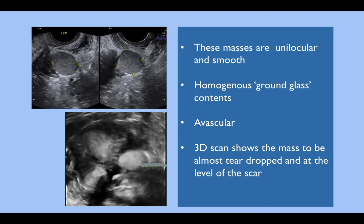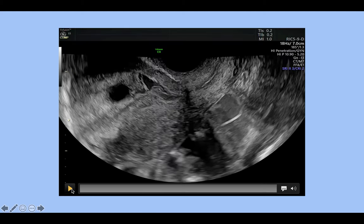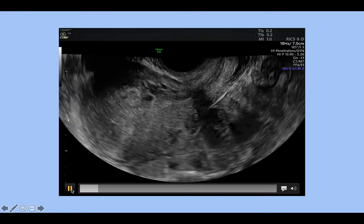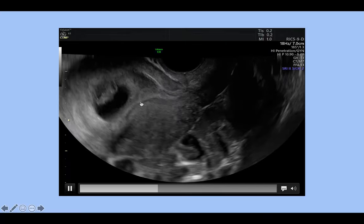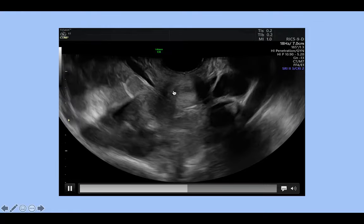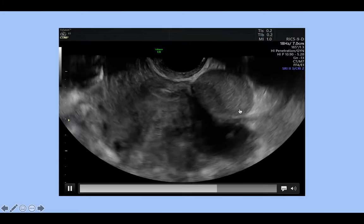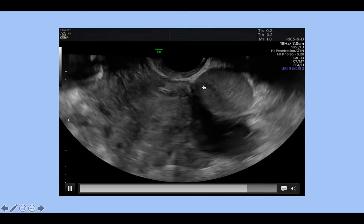These masses are unilocular and smooth, homogenous with almost ground-glass contents like an endometrioma, and they are avascular. On 3D scan you can see the endometrial cavity, the caesarean scar, and this teardrop mass at the level of the scar. It is quite important to recognise these because they are very often misdiagnosed as ectopic pregnancies. In this video we can see the uterus with a normally sited pregnancy and the mass anterior between the bladder and the uterus, small and attached at the level of the scar — looking very much like an endometrioma.